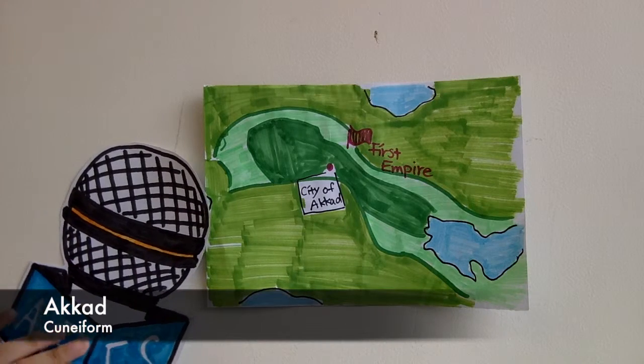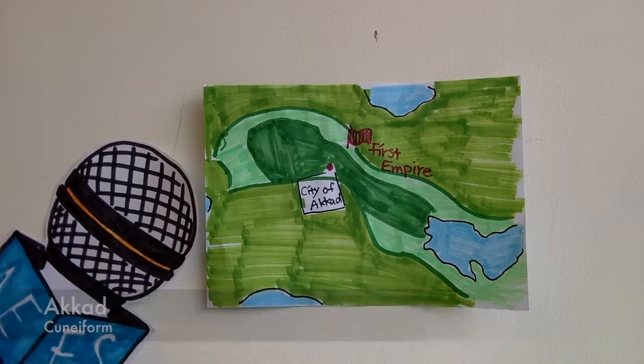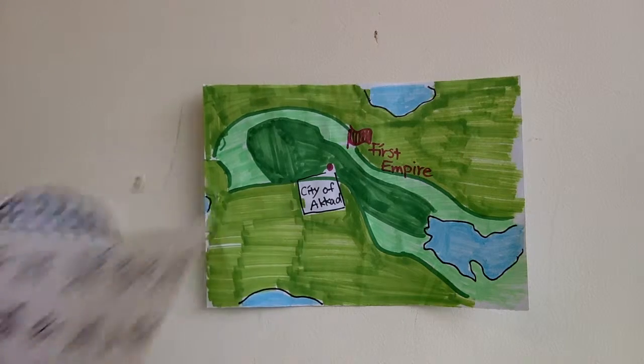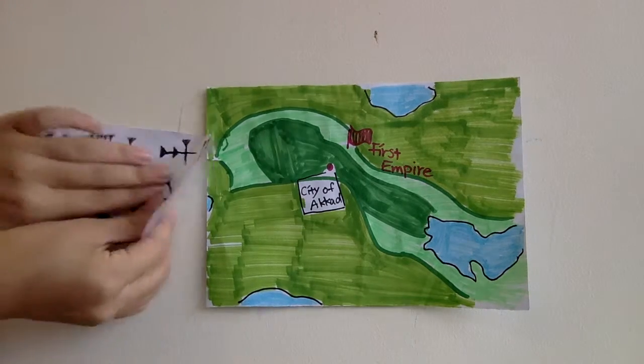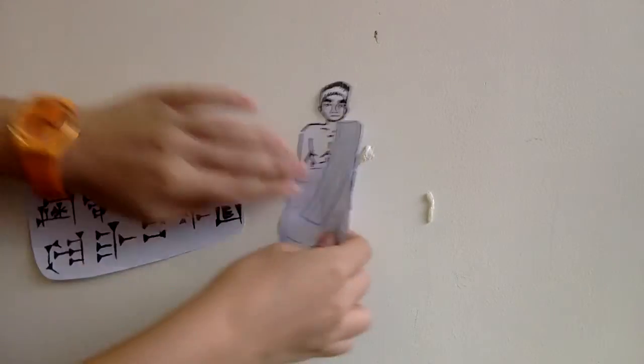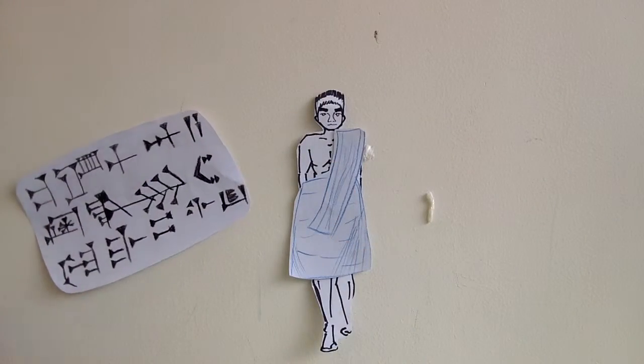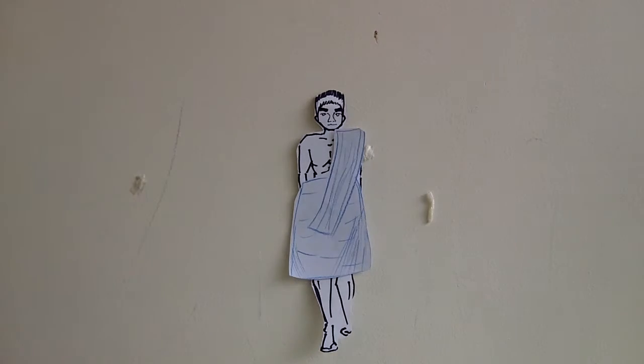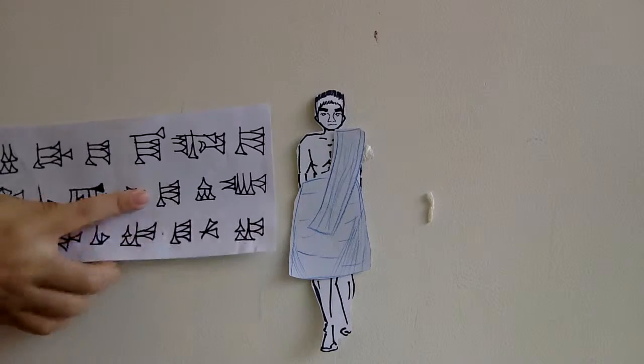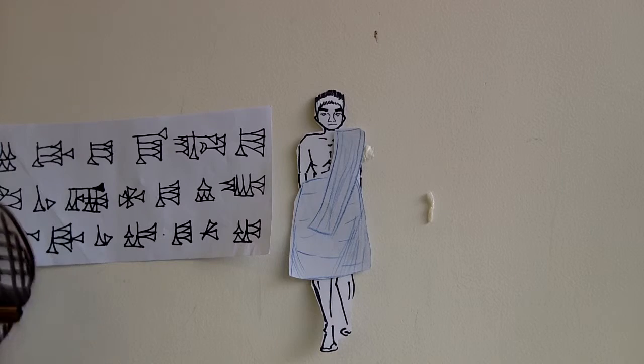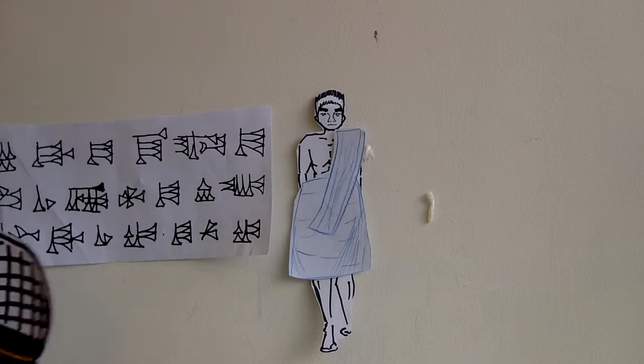Fortunately, we invited the scribe at that time and he's gonna tell us some information about Akkadian language. Okay. In about 2350 BC, the Akkadian cuneiform script were selected from Sumer's cuneiform. So many Sumer words were borrowed into Akkadian. And Sumer's logograms were given both Sumer and Akkadian readings.